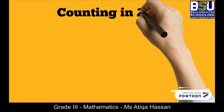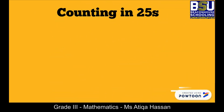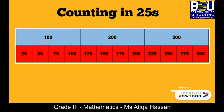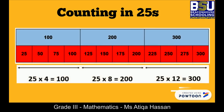We are going to count in 25 steps. This bar model shows the first 12 multiples of 25. There are 4 lots of 25 in 100, 8 lots of 25 in 200, and 12 lots of 25 in 300.